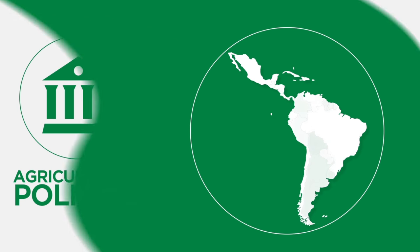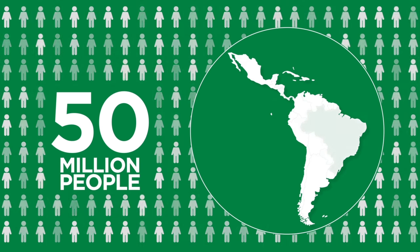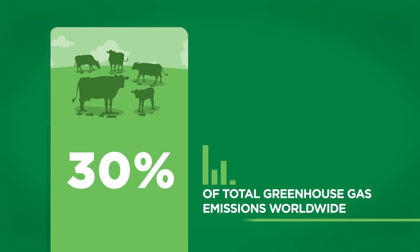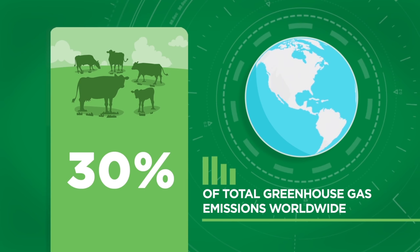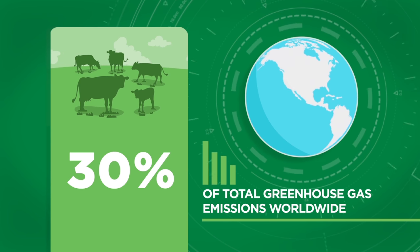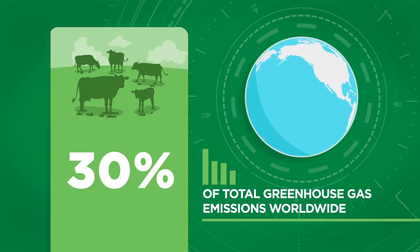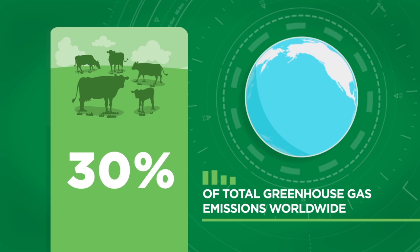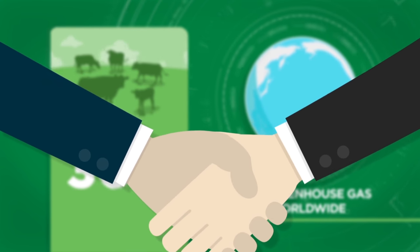In Latin America and the Caribbean, 50 million people go hungry every day. What's more, agricultural activity accounts for 30% of total greenhouse gas emissions worldwide, and all of this is influenced by the agricultural and trade policy decisions that countries make.